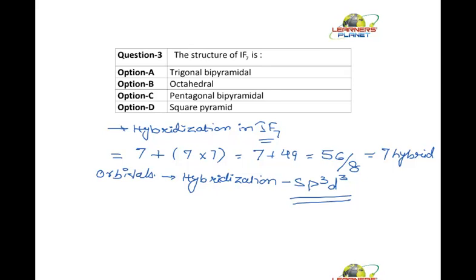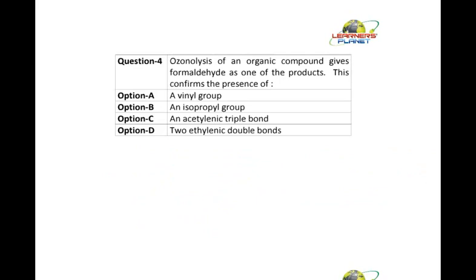What will be the shape of this? It comes out to be pentagonal bipyramidal geometry. This is your pentagon, and the fluorine atoms are present at its corners. We have one down and one up. So this is a pentagonal bipyramidal geometry. This will be your answer. In order to determine any structure, you need to know about the hybridization. Let's take up the next question.